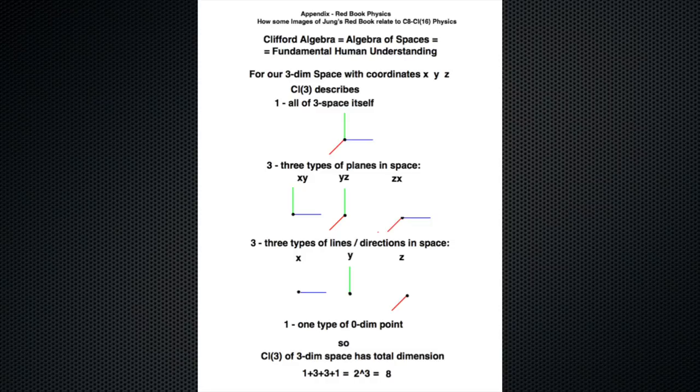The Clifford Algebra is basically an algebra of spaces, how spaces fit together, and it's fundamental for the way kids learn to play ball or any other thing. In three-space, the Clifford Algebra describes all of three-space. There are three types of planes in three-space, three directions up, down, forward, back, and there's one zero-dimensional point.